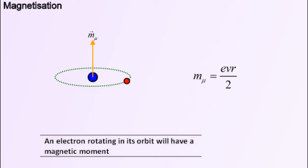We had seen that an electron moving in its orbit could be considered as a current-carrying coil. Therefore, it would have a magnetic moment.